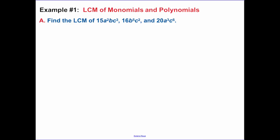Now looking for our least common multiple of monomials. Monomials, one term. So we have to break this down. We have to break down 15 a squared b c cubed into 15. Well that is 5 times 3, a times a, times b, times c, times c, times c. When we're looking at 16 b to the 5th c squared, well 16 is 2 to the 4th power. And then I have b 5 times, and I have c 2 times.